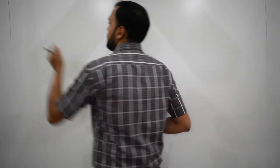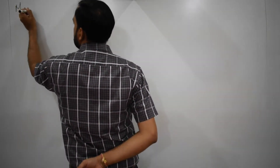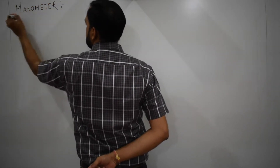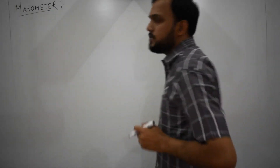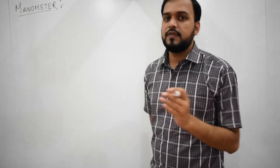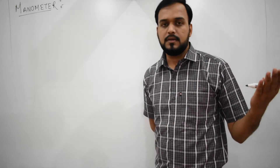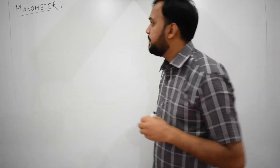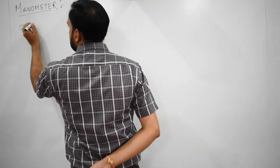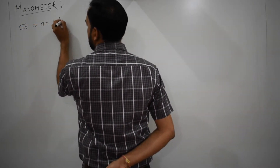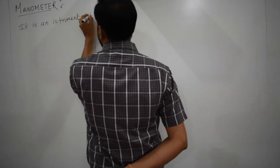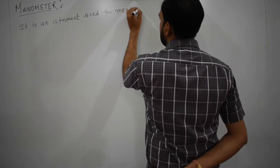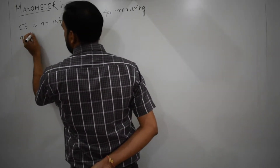What is a manometer? It is an instrument which is used for measuring the pressure of a fluid. There are many other instruments present, but this is also an instrument by which you can measure fluid pressure.